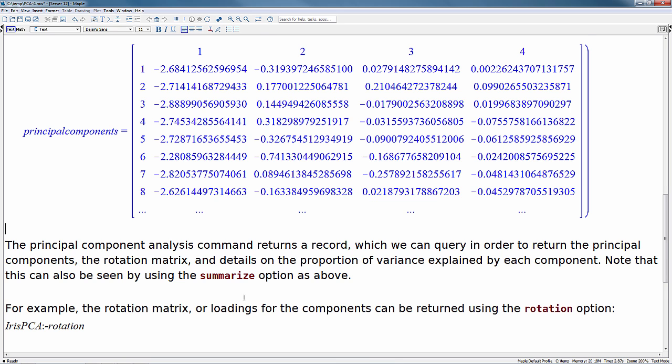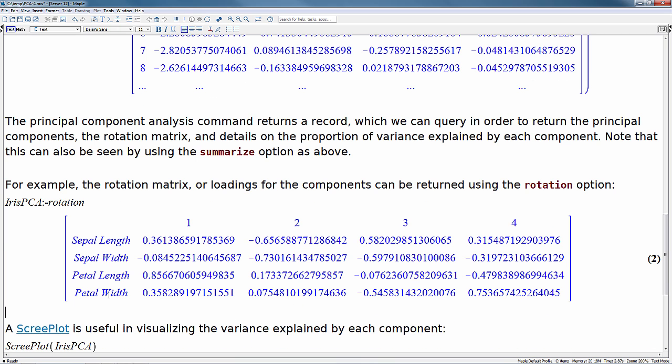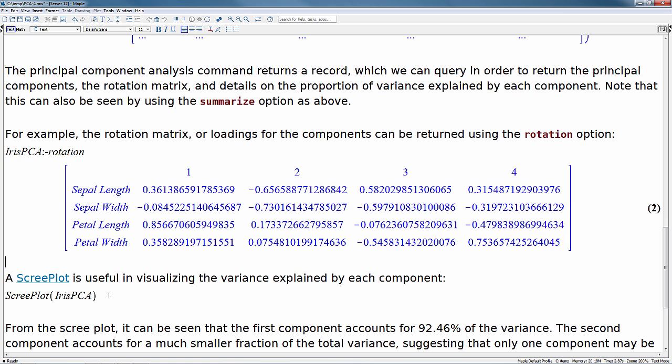For example, we can now take the iris PCA and do this colon dash rotation, and this will return our rotation matrix for the loadings of the components to us. So there's a number of things we can do with that record. We can query it in a number of different ways. Now, there's a number of different commands you can actually use directly on a record generated by the PCA.